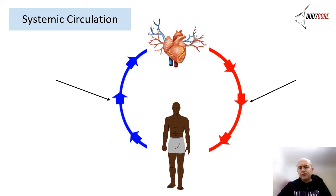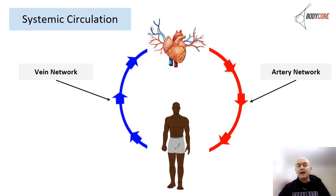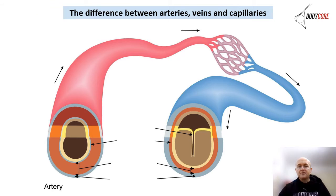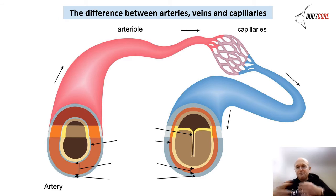Systemic circulation goes from the heart to the rest of your body — from your brain to your legs, all tissue, including the heart itself — through a network of arteries and veins. Blood flows from artery down into arterioles, then to capillaries (the fine cells), into venules, and then into the vein.